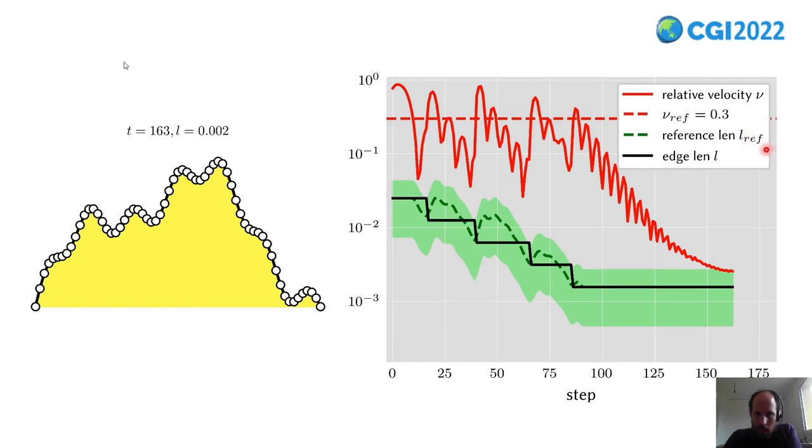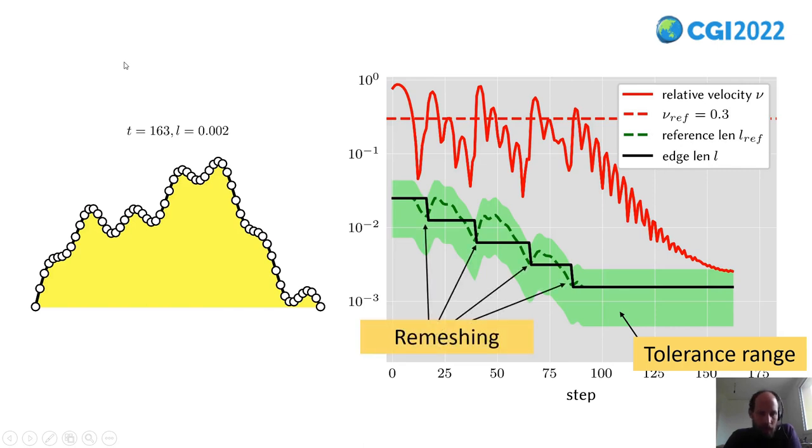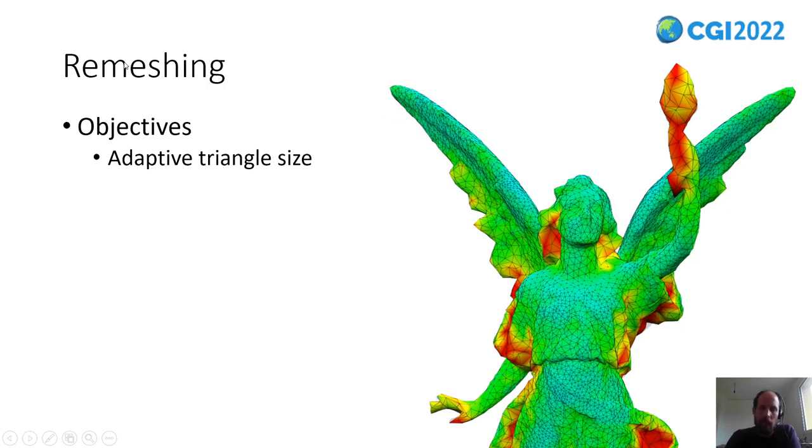The controller then modifies these reference lengths, the green dashed line. It wouldn't be a good idea to use that directly because it changes all the time. So we use a tolerance range around this green line. And when the actual edge length, the black line, leaves this tolerance range, then the actual remeshing happens. This was a very simple example. In the real 3D case, we do this calculation for each vertex. And then we have finally found our adaptive triangle size.